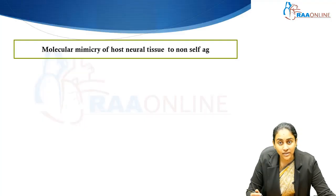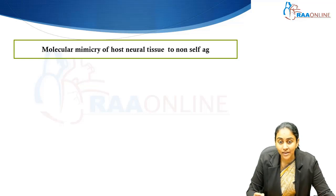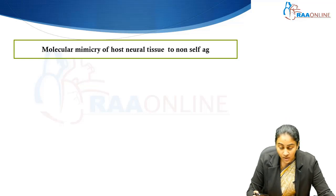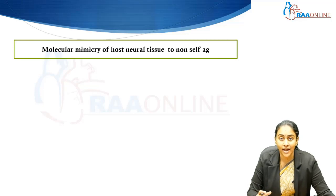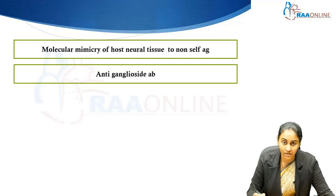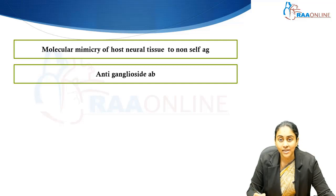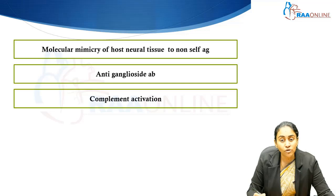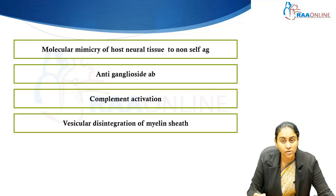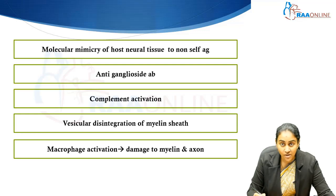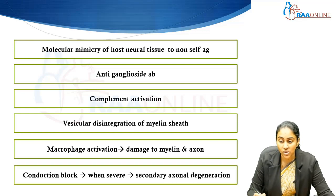Let us go a little deeper to understand how the whole process of demyelination and axonal damage happens. Basically, there is going to be some antecedent event in the form of an infection or vaccination. The immune responses naturally triggered against non-self antigens are misdirected against the host neural tissue because of molecular mimicry. These anti-ganglioside antibodies instigate activation of the complement system, bringing about vesicular disintegration of the myelin sheath, resulting in macrophage activation which ultimately causes significant myelin damage and axonal degeneration.